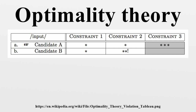In optimality theory, every constraint is universal — CON is the same in every language. There are two basic types of constraints. Faithfulness constraints require that the observed surface form match the underlying or lexical form in some particular way; these constraints require identity between input and output forms. Markedness constraints impose requirements on the structural well-formedness of the output. Each plays a crucial role in the theory: faithfulness constraints prevent every input from being realized as some unmarked form, and markedness constraints motivate changes from the underlying form.